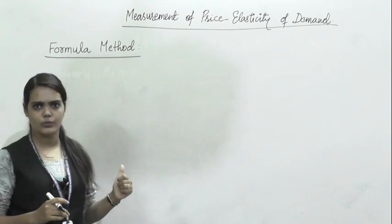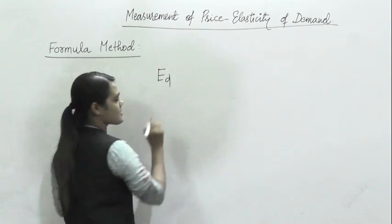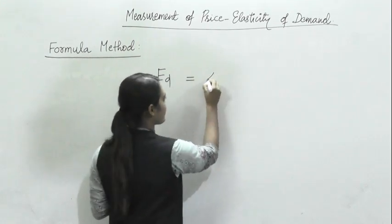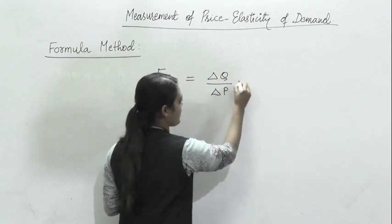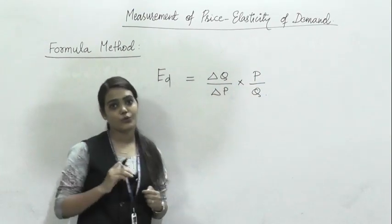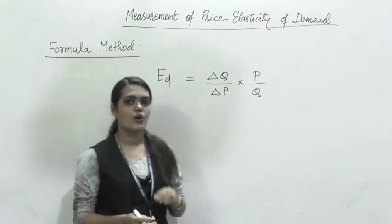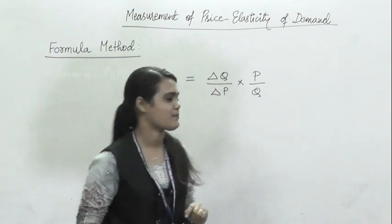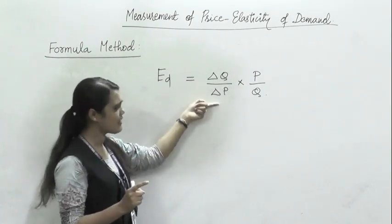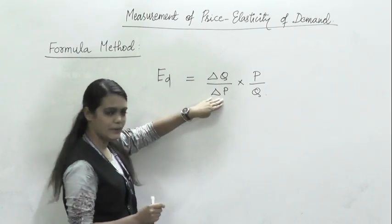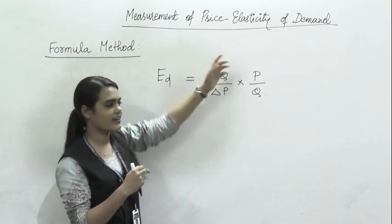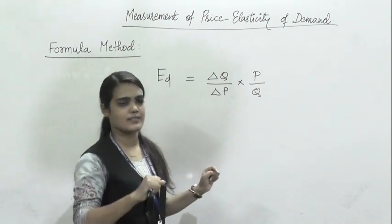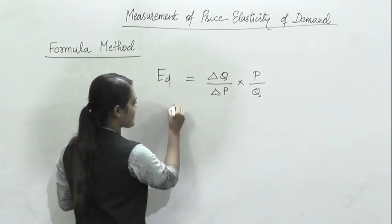The first basic method of measuring price elasticity is the formula method. The symbolical elasticity is written as Ed, meaning elasticity of demand. The basic formula is: Ed = (ΔQ / ΔP) × (P / Q). You don't need to mug up this formula because it is simple — the base factor responsible for price elasticity is price, so ΔP is in the denominator. ΔQ is what changes due to ΔP, and it is a proportionate change, so we multiply by P upon Q.